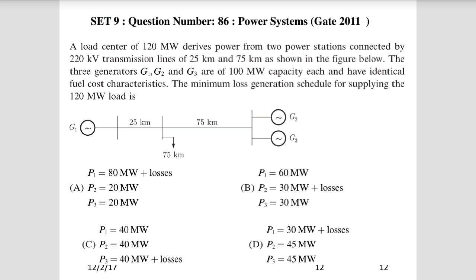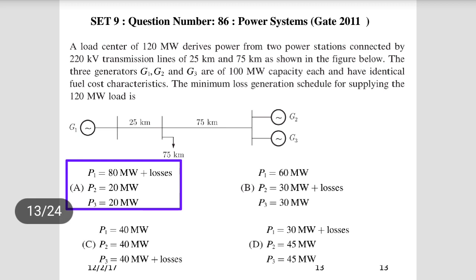The losses must be supplied by the nearest generator G1. So P1 = 80 MW + losses, and G2 and G3 share the remaining load equally. Therefore choice A is correct: P1 = 80 MW (plus losses), P2 = P3 = 20 MW each. Since all generators are equal capacity, the nearest generator delivers maximum load and the other two share equally.